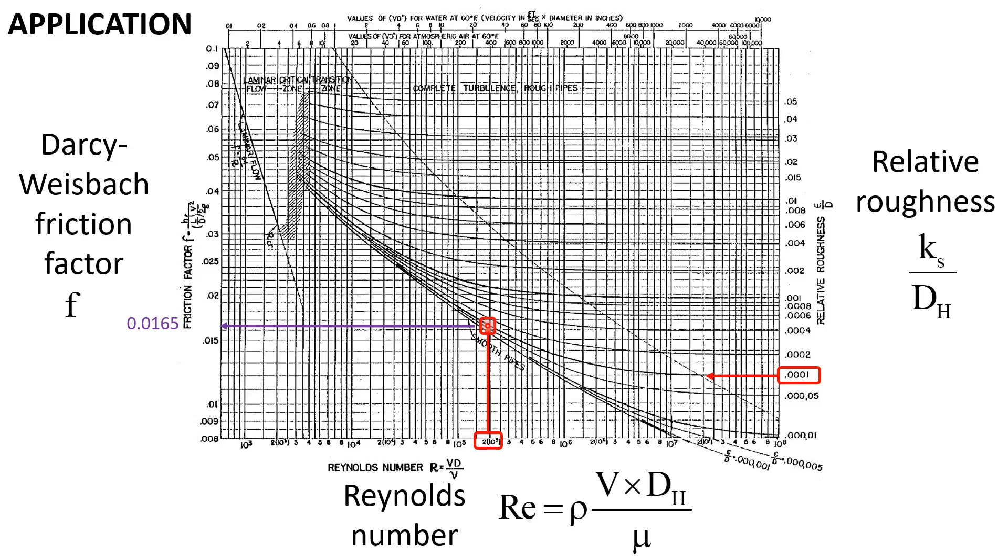When the flow is laminar, on the other hand, we only need the Reynolds number and can read directly the friction factor for laminar flow.